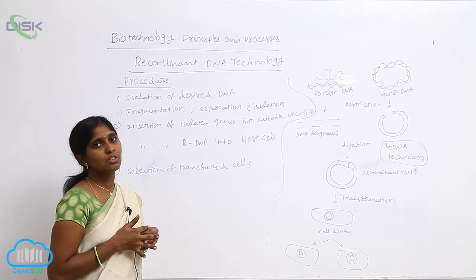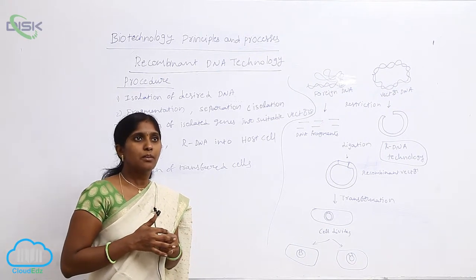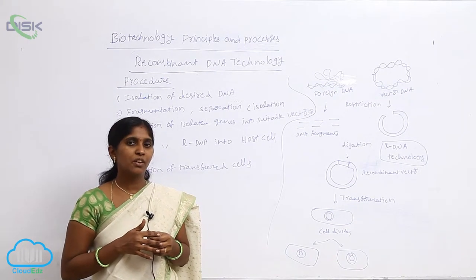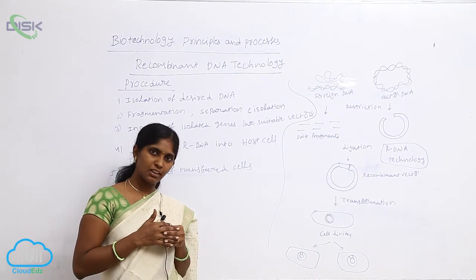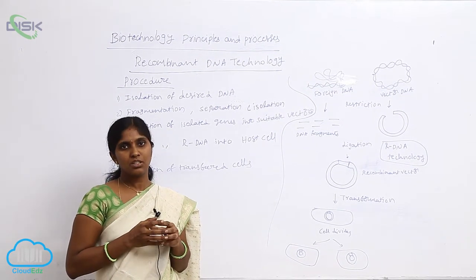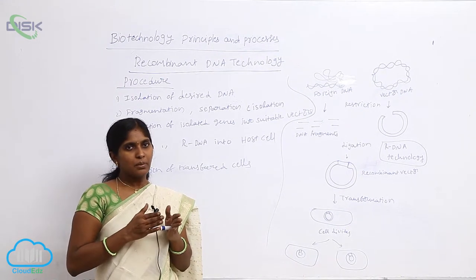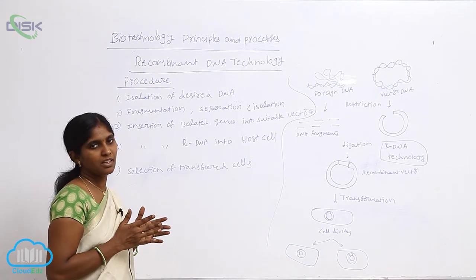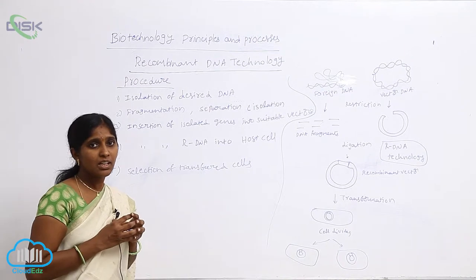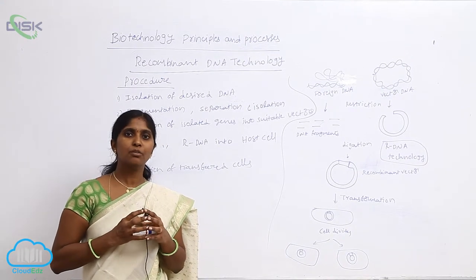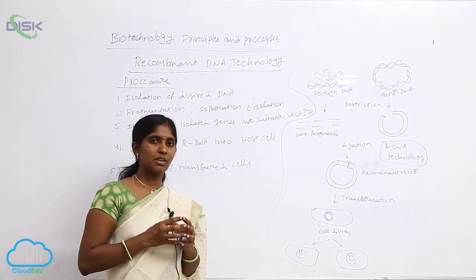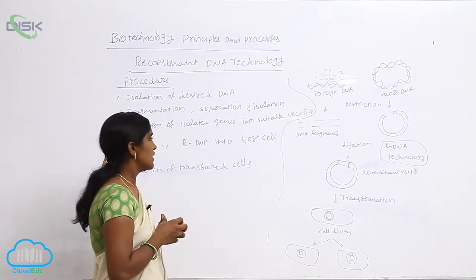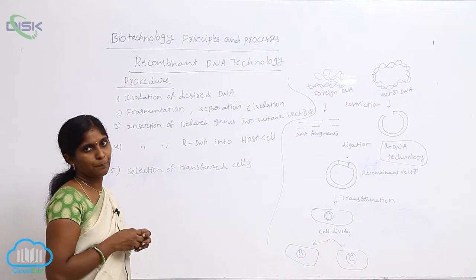Cold ethanol is used to favor the sedimentation or settlement of the DNA. Finally, the DNA settles at the bottom of the centrifuge tube. By removing all contaminants, we get only the DNA. The isolated DNA is preserved at minus 4 degrees Celsius with the help of cold ethanol or distilled water.